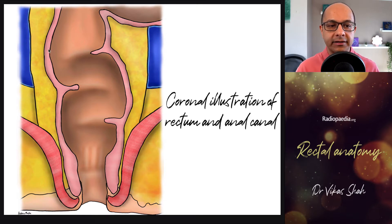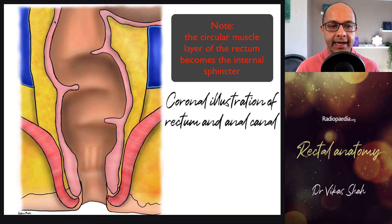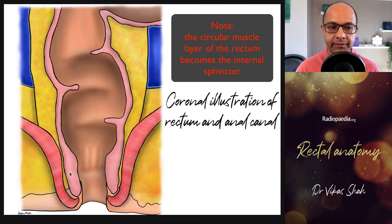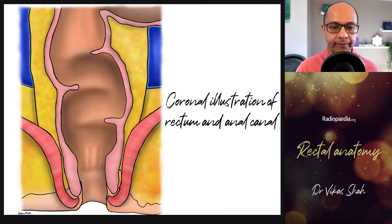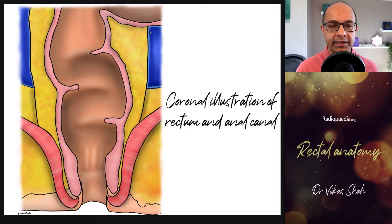The rectum is the terminal part of the GI tract — really the anal canal is, but the rectum leads on to the anal canal. On a coronal view, most of the wall is made up of the longitudinal muscle layer. The termination is the internal sphincter, surrounded by the external sphincter, which is the continuation of the levator ani muscle. The rectum is enveloped in a compartment known as the mesorectal compartment, lined by the mesorectal fascia and containing the mesorectal fat.